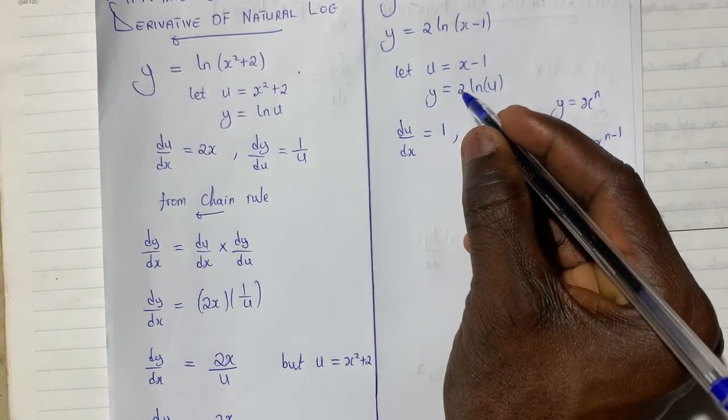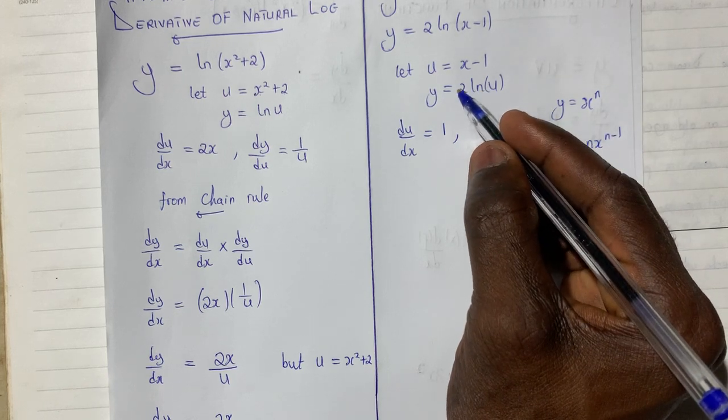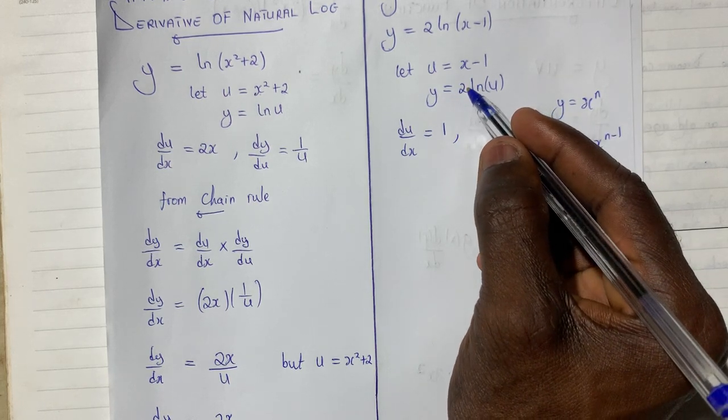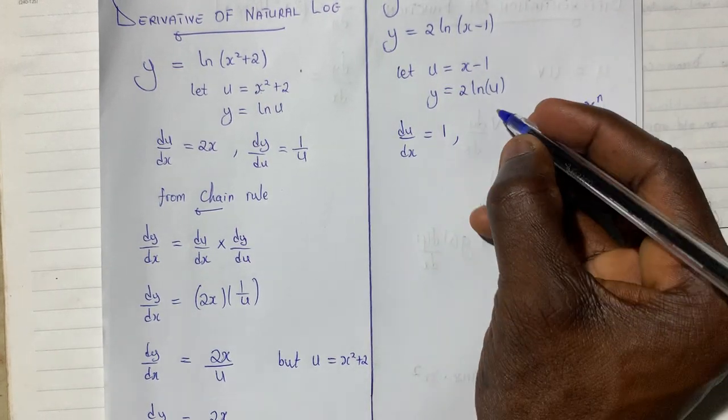Now when we differentiate this one, because I have factorized 2 out here, I will just maintain the 2 and differentiate ln u and then bring the 2 back.